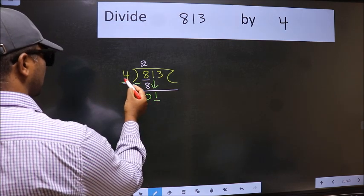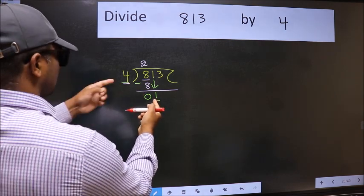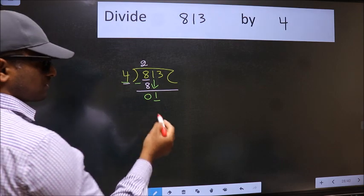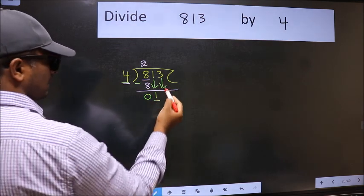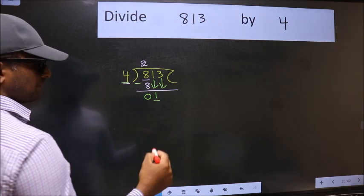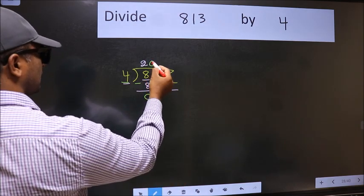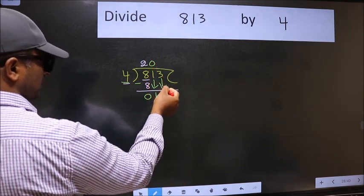Now here we have 1 and here 4. 1 is smaller than 4. So we should bring down the second number. And the rule to bring down second number is we should put 0 here. Then only we can bring this number down.